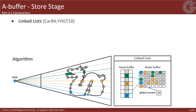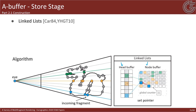Historically, the first MFR approach was the linked-list A-buffer. The main idea was to store all generated fragments in linked lists instead of keeping only the closest one. The GPU implementation requires two buffers operating on per-pixel linked lists: a head buffer containing head pointers to each list, and a node buffer storing data and connectivity information. Since the lists are created in parallel, atomic operations are applied to ensure correct modification of shared data.